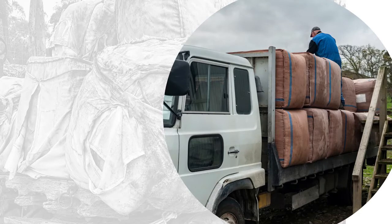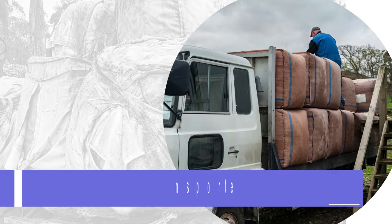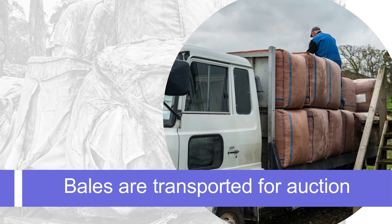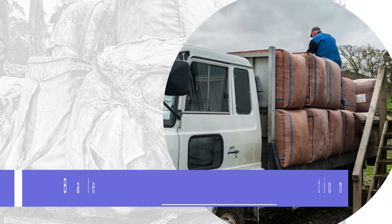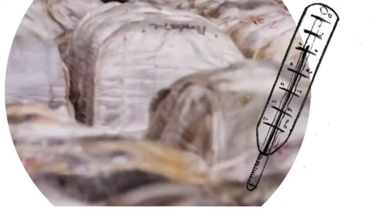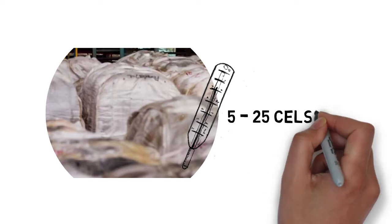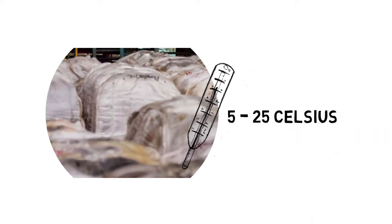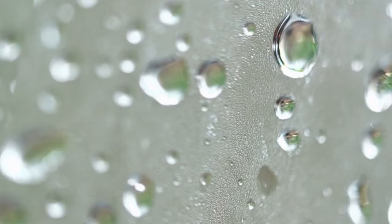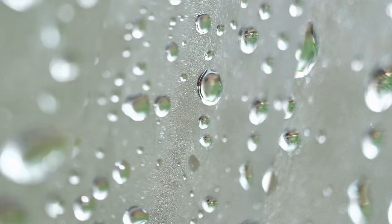Mohair and wool of the same grade is pressed into bales. The bales are loaded onto trucks and taken to the warehouse for sale on auction. Mohair and wool need to be stored in rooms with the right temperature, humidity or moisture, and ventilation conditions. A favorable temperature range is between 5 and 25 degrees Celsius.